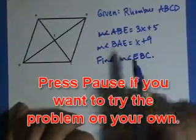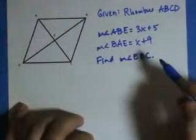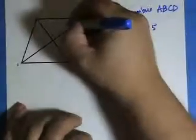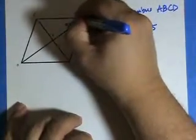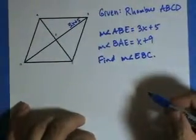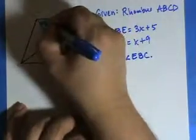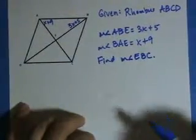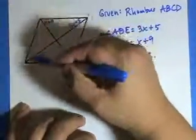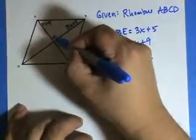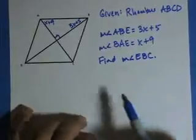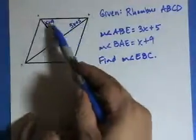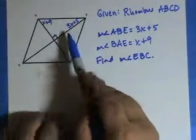Let's label the given information. Measure of angle ABE equals 3x plus 5, so 3x plus 5 is in here. BAE is over here, x plus 9. If you recall, the diagonals of a rhombus are perpendicular, so you can put a right angle symbol in there. You have a right triangle.